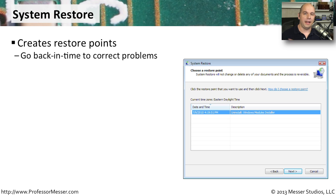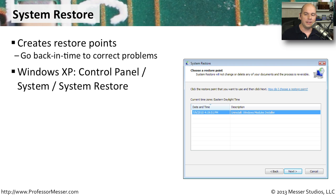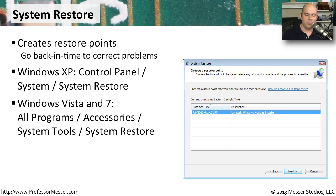If you've ever installed an application and then that application has created problems with your operating system, then you've realized how valuable the system restore function can be. System restore will go back to a restore point. Restore points are created every day and every time that you install a new application. If you wanted to rewind back to a certain date and time, you can change your entire Windows configuration to go back to that particular time frame. You can find system restore in Windows XP under Control Panel, then System, then System Restore. In Windows Vista and Windows 7, it's under All Programs, Accessories, System Tools, and System Restore.